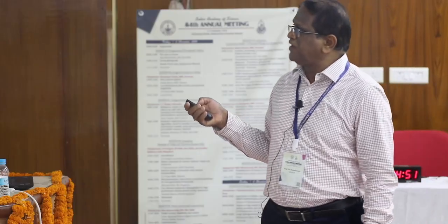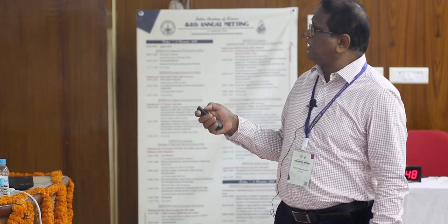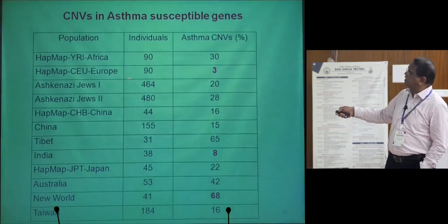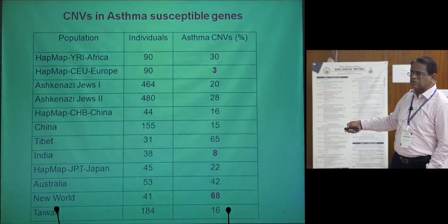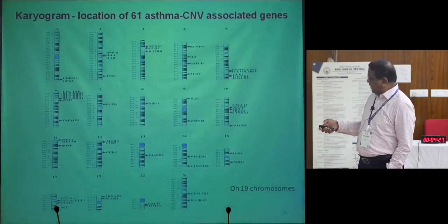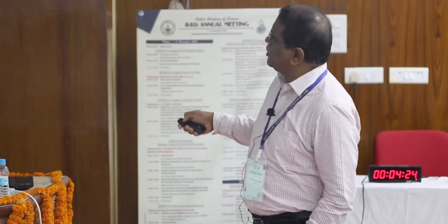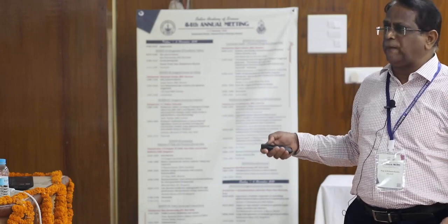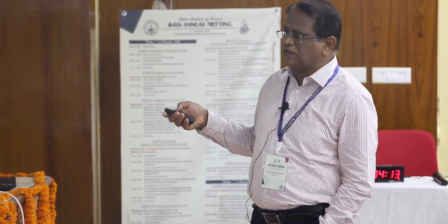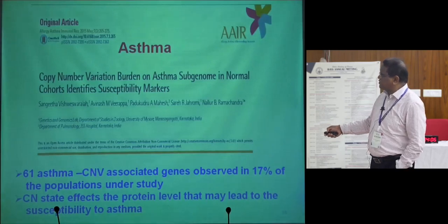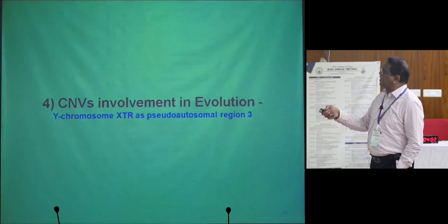Similarly, for asthma, we screened about 300 genes for CNV studies and identified different percentages across individual populations. Europe showed less, while the new world showed about 68 percent of CNV-hit genes. These were mapped onto chromosomes, with hits on chromosome 19. The message here is that different genes are seen in different populations, but 4 major genes are seen in all populations involved in risk for asthma. Sixty-one asthma CNV-associated genes were observed in about 70 percent of the populations.